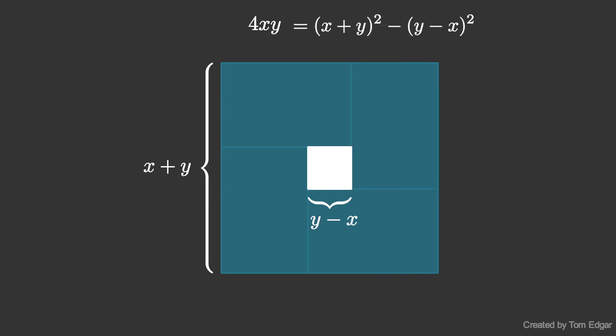And the term y minus x squared is non-negative, so if we remove that term, we conclude that 4xy is less than or equal to x plus y squared.